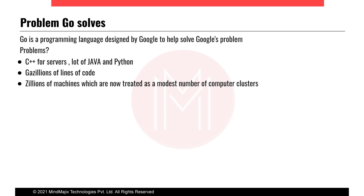What problem does Go solve? It is basically designed by Google to help solve Google's problems. Google has complex problems like building zillions of machines in a production environment and writing trillions of lines of code to manage their search engines, servers, and cloud products. They'd been using C++ for servers, and a lot of Java and Python. Java and C++ are very complex in engineering — you have to write a large number of lines of code to get things done.